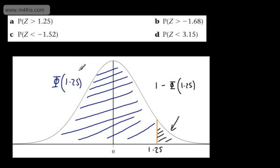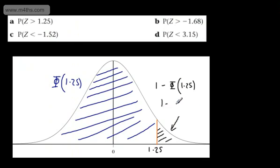So all we need to do is look up in our tables phi of 1.25 and subtract that away from 1. So where are we? 1.25, which is going to be 0.8944. So what we need to do is 1 minus 0.8944. If you want to use a calculator, you're more than welcome to do so. This is going to give us 0.1056. So the probability that Z is greater than 1.25 is 0.1056.